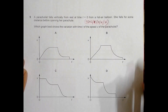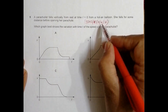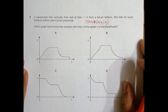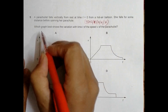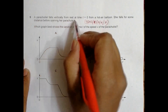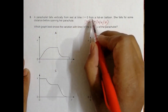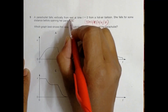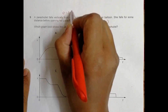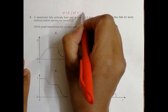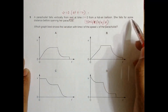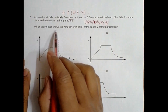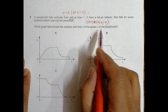This is for the 2018 October/November Paper 1, Question 9 — the newest question we have. The question states: a parachutist falls vertically from rest at time t = 0 from a hot air balloon. She falls for some distance before opening her parachute. Which graph best shows the variation with time t of the speed V of the parachutist?